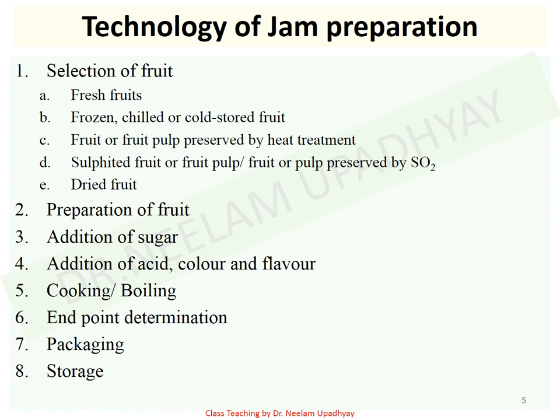Generally, if you go for overripe fruits they yield a pasty kind of product. The reason is that pectin is present in underripe and ripe fruit, whereas pectic acid is present in overripe fruit, which does not have gelling capability. However, preparation of jam from fresh fruits is generally not always possible because the fruit will not be available around the year.